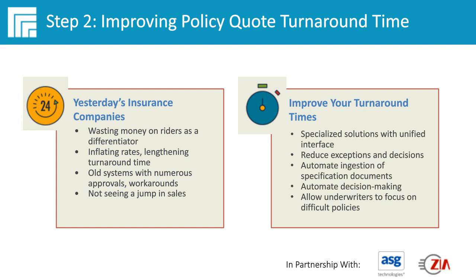You need to automate the ingestion of different document types and the extraction of information off those documents. Further down the maturity spectrum, you can have automatic decisions made for you: the ones that are an automatic 'no' can be automated; for opportunities that are an automatic 'yes' and wouldn't be worth an underwriter's time to review, you can rubber-stamp those and push them on to fulfillment. At the end of the day, it's about freeing up your knowledge worker to do more of what you're originally paying them to do — review information and make a decision.